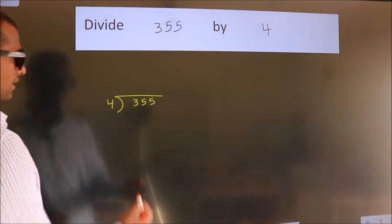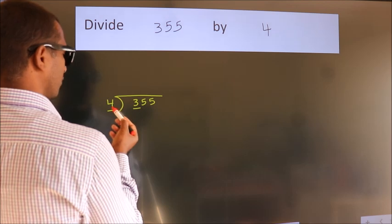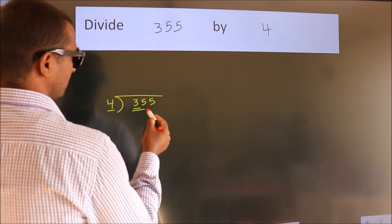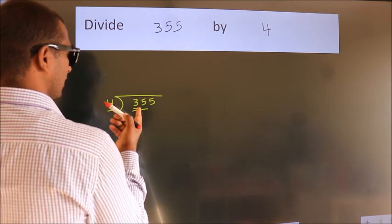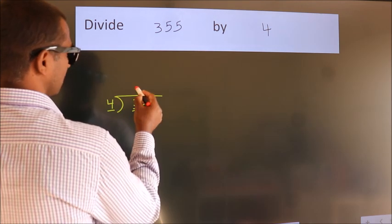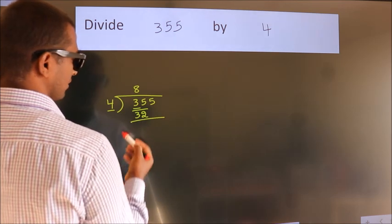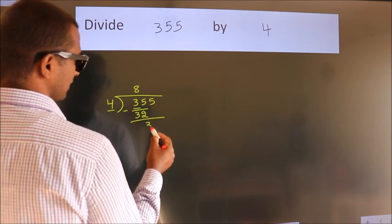Next, here we have 3, here 4. 3 is smaller than 4, so we should take two numbers: 35. A number close to 35 in the 4 table is 4 times 8 equals 32. Now we should subtract. We get 3.